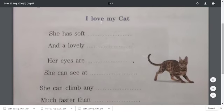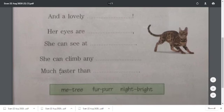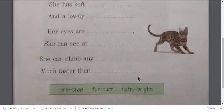I love my cat. She has soft fur and a lovely purr. Her eyes are bright. She can see at night. She can climb any tree, much faster than me. Now children, complete the poem in your textbook itself.